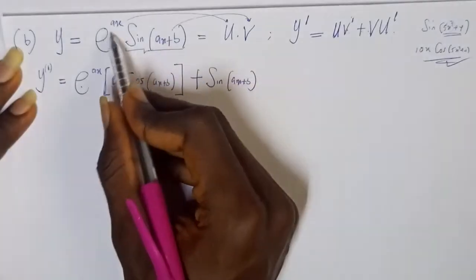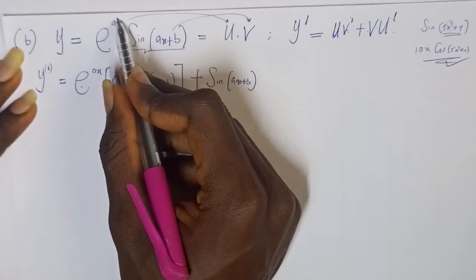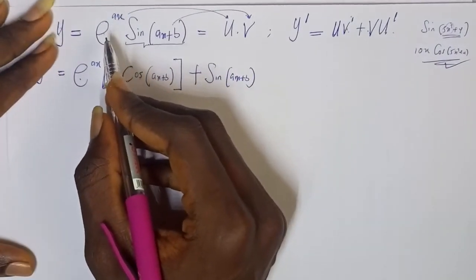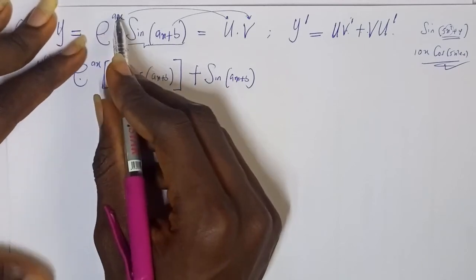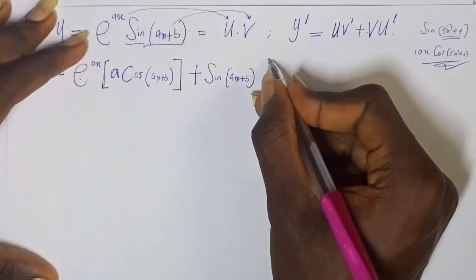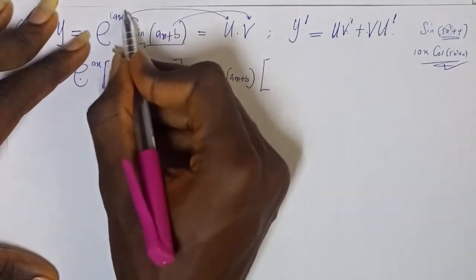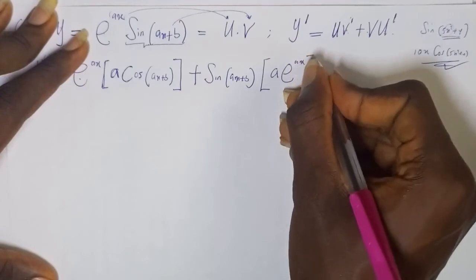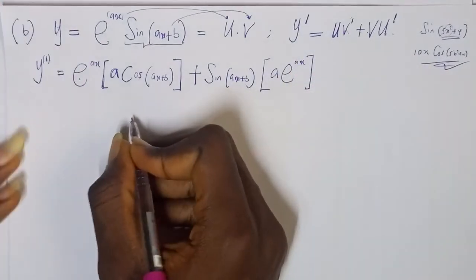Then u' simply implies to differentiate exponential to the power of ax. How do you deal with differentiation of an exponential function? You all know that this is very straightforward. Differentiate the power you have here. Differentiate ax, that is a. Then, repeat all the exponential function back, which is e to the ax.